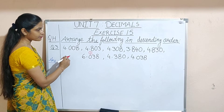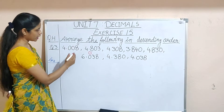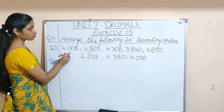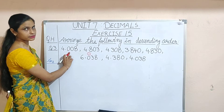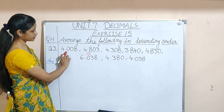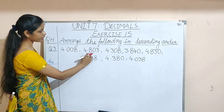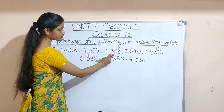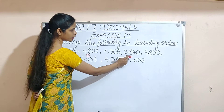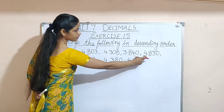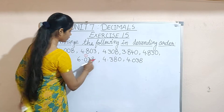For the second number, many numbers have a whole number part of 4. So first we will compare the digit at the first decimal place. We have 4.0, 4.8, and 4.3. Looking at the first decimal digits: 8 and 3 stand out, so we set aside 3 and focus on 4.8, 4.3, and 4.0.